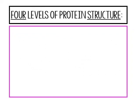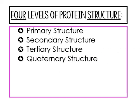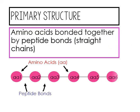Proteins can bend and fold, and so we have four different levels of protein structure: primary, secondary, tertiary, and quaternary. The primary structure is where you have amino acids that make a straight chain. Looking at the diagram, we have amino acids 1, 2, 3, 4, 5, 6 — all noted by their abbreviated labels.